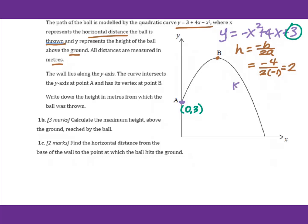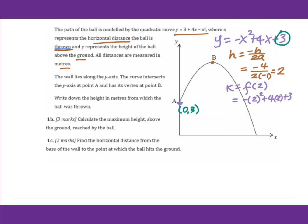The k equals f of 2, which means negative 2 squared plus 4 times 2 plus 3. Then you will get 7. In other words, the maximum height equals 7 meters.